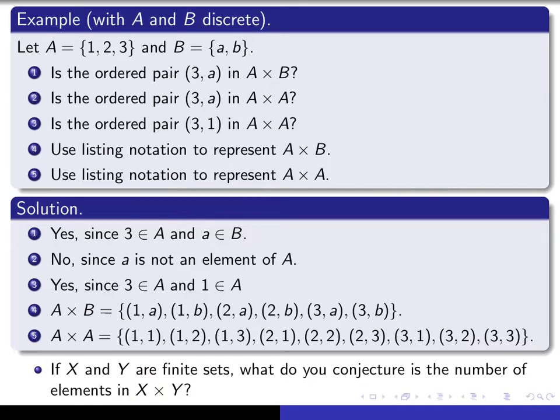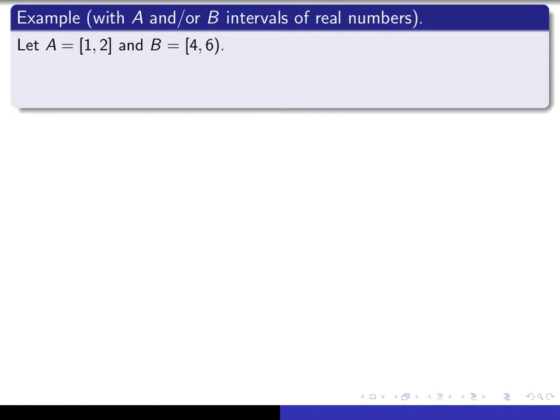One way of measuring the size of a discrete set is to simply count how many elements are in that set. And so, the fact that the Cartesian product has the number of elements in X times the number of elements in Y justifies giving that set the name X × Y.